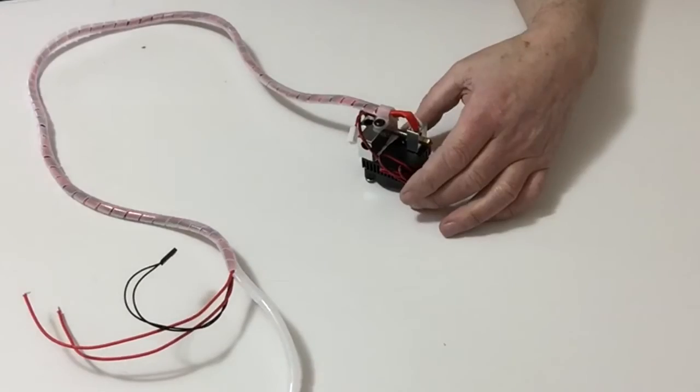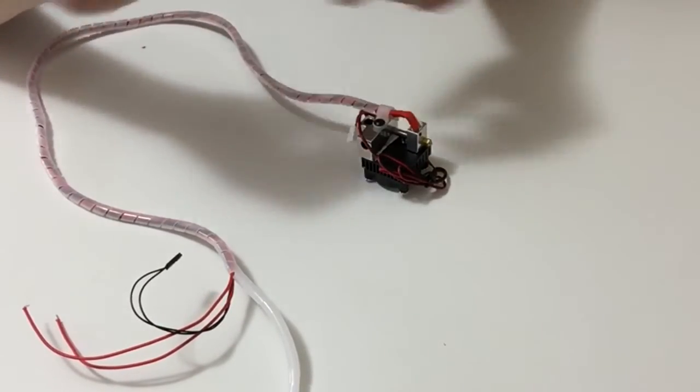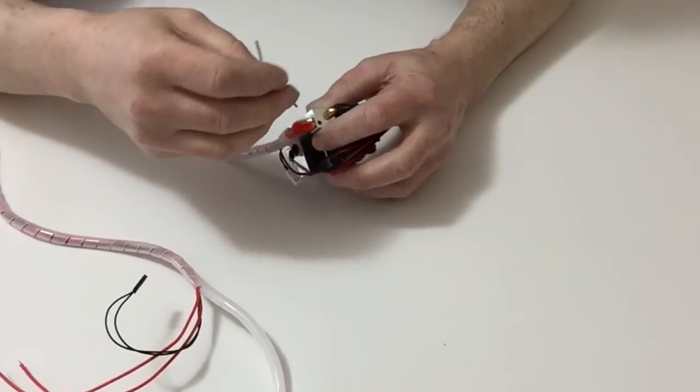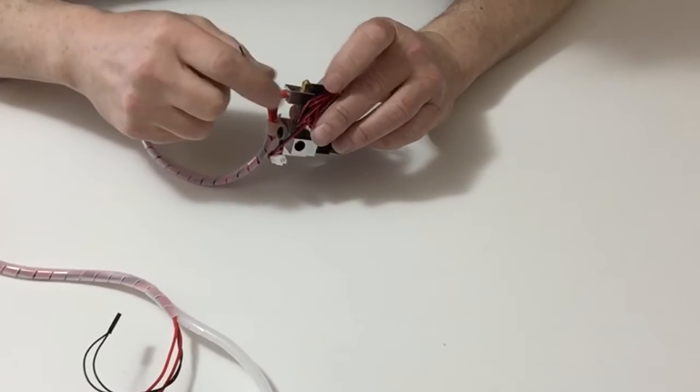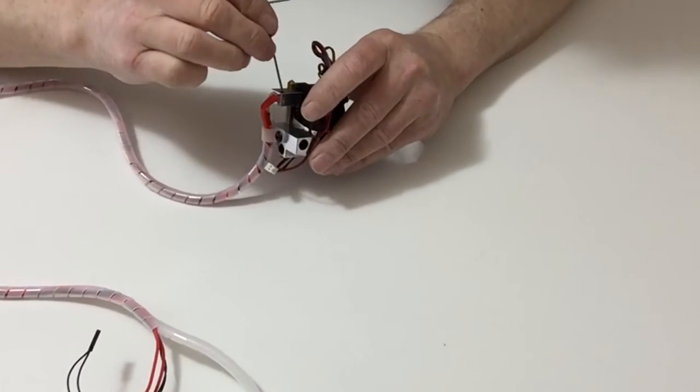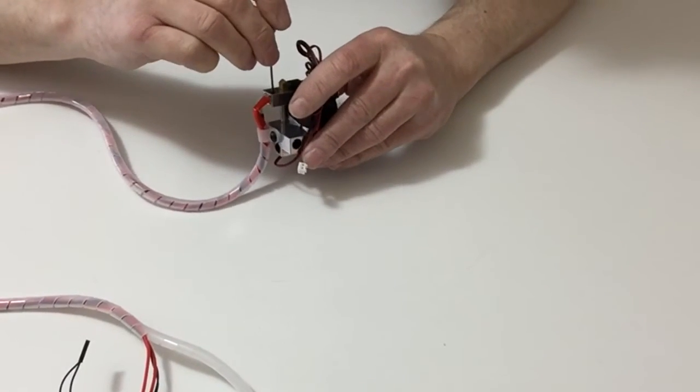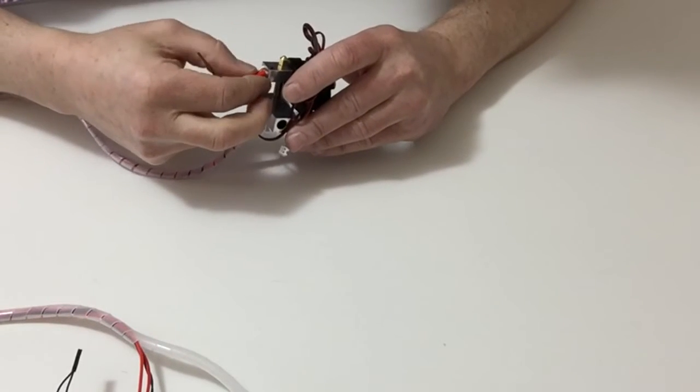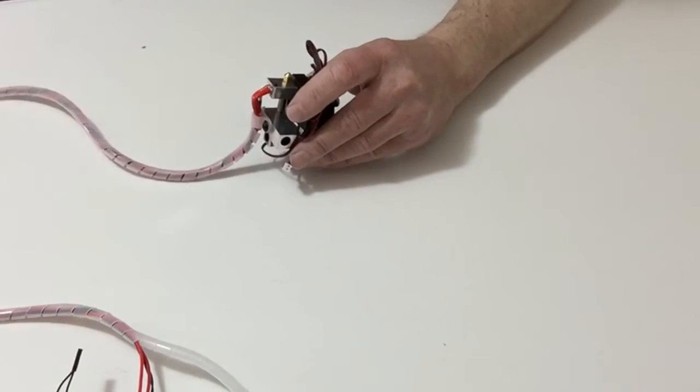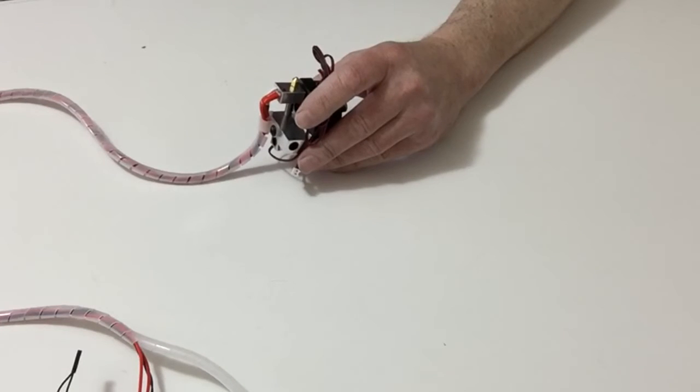Take your 1.5mm Allen key and make sure that the end of the heat block is not touching the thermostat on the heat sink.